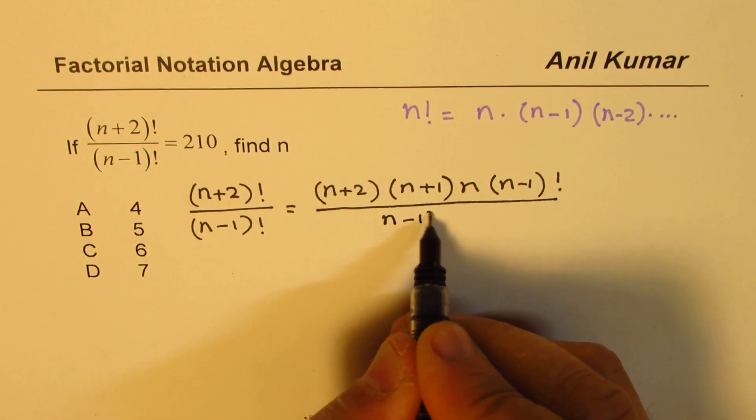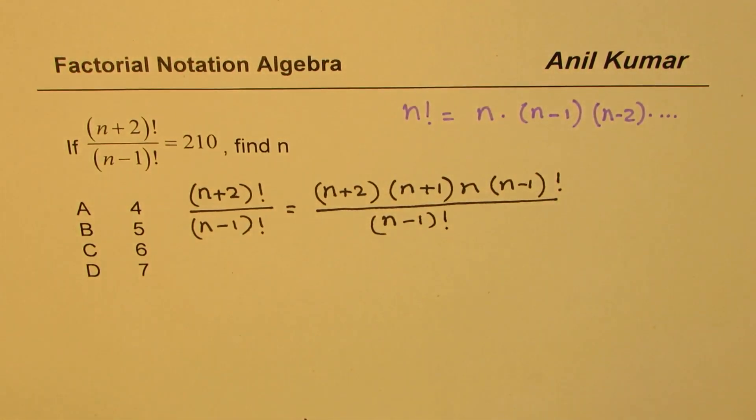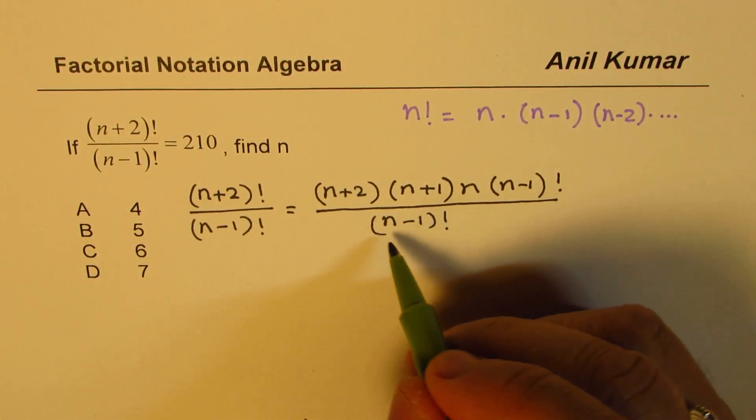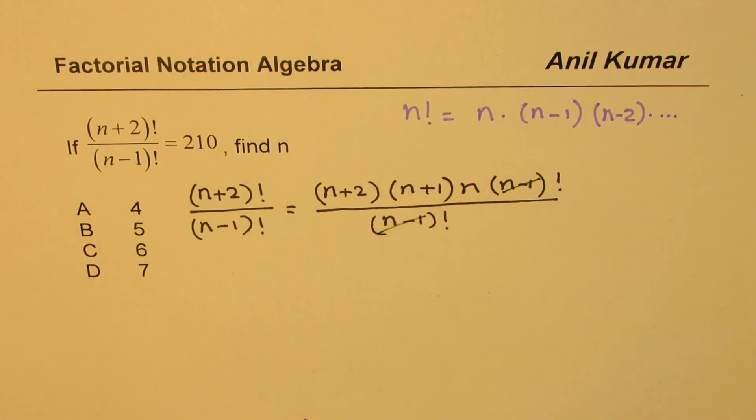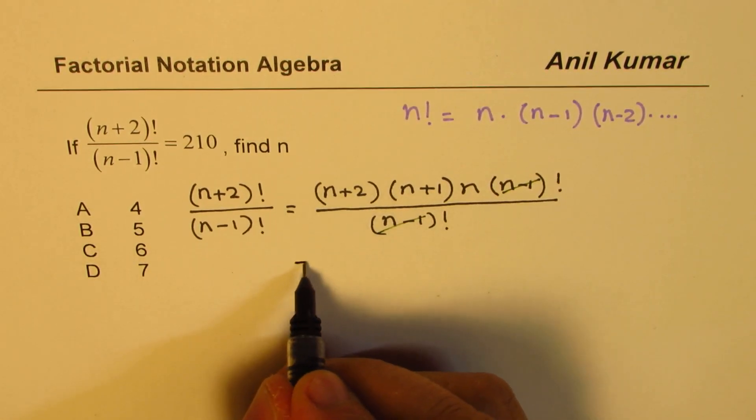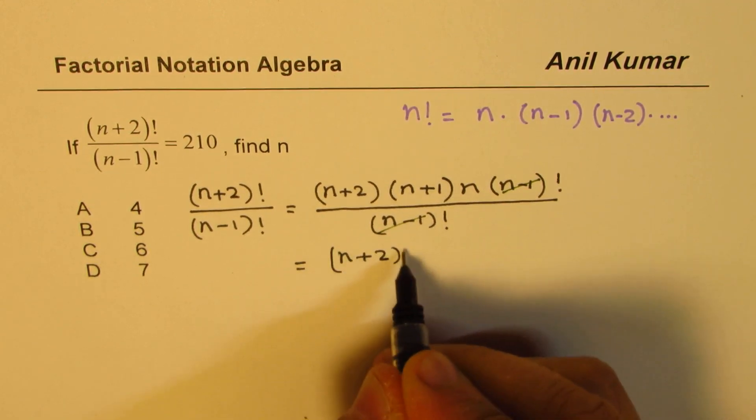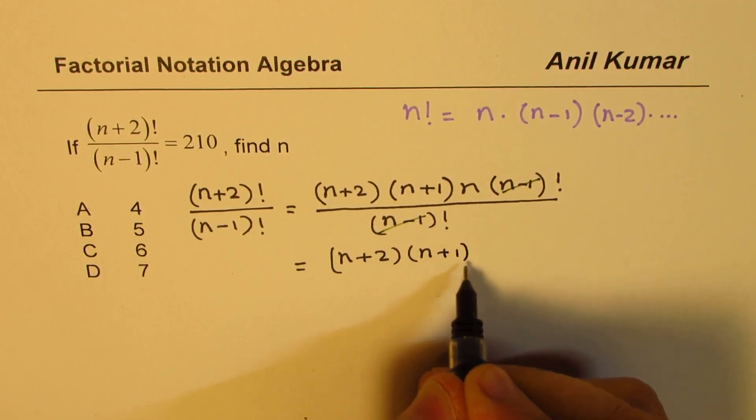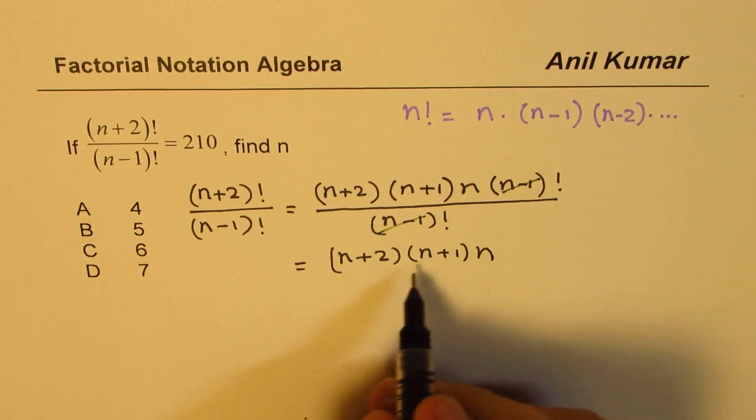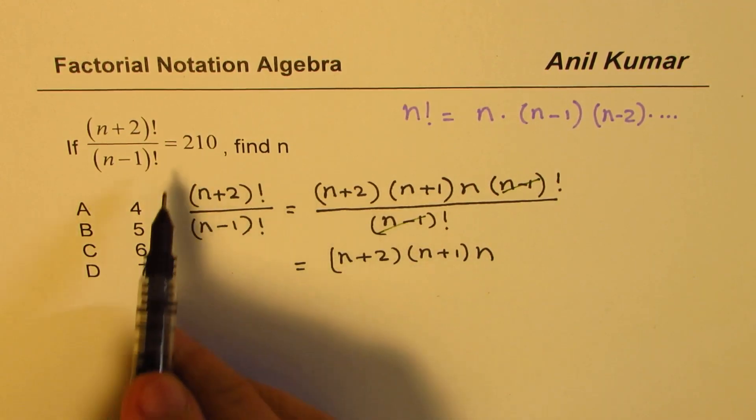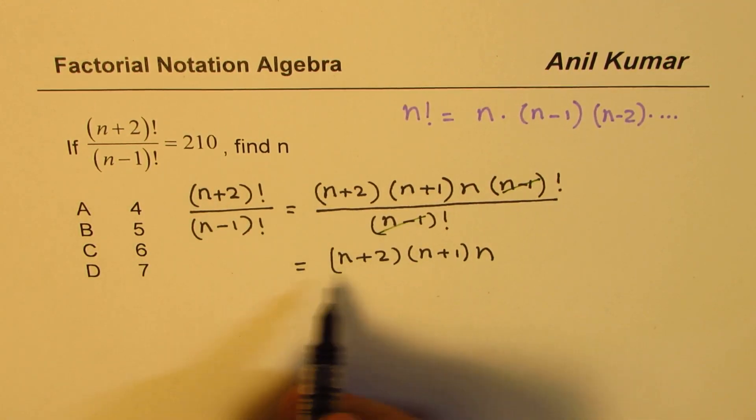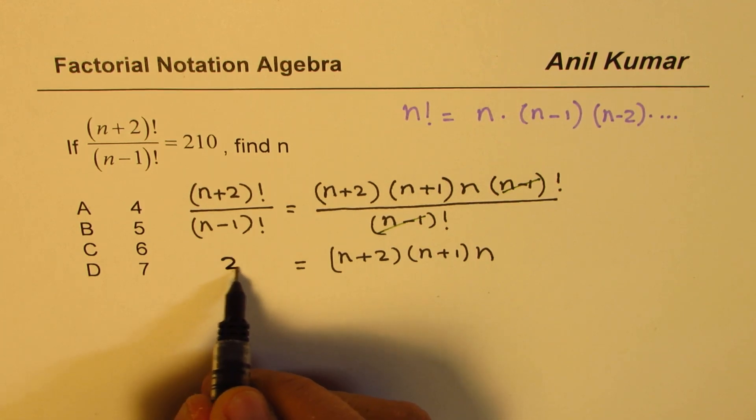We can actually cancel these two factors and simplify the given expression. What we get here is that this is equal to (n+2) times (n+1) times n, and all this is given to us as equal to 210.